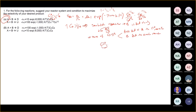So we have a CSTR here. The first one, we feed in A. At the same time, we feed in B. But for the second reactor, B is fed in a small amount — at a small amount.